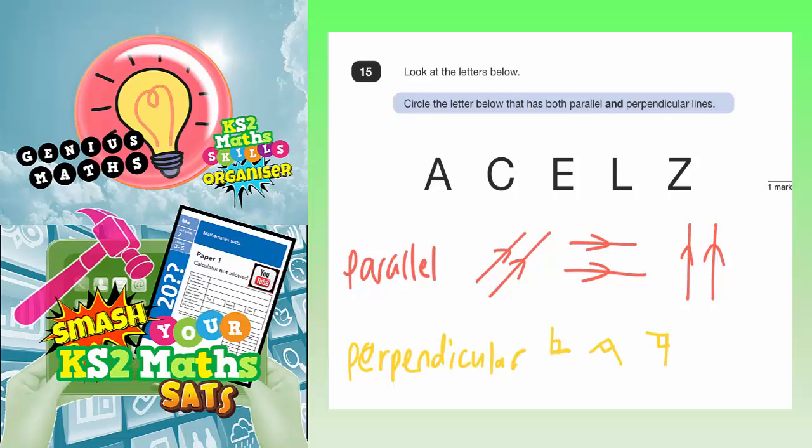Question 15. Look at the letters below. Circle the letter below that has both parallel and perpendicular lines.